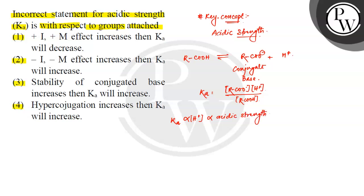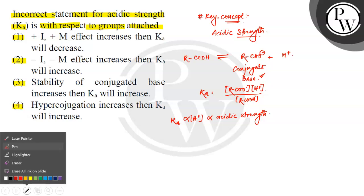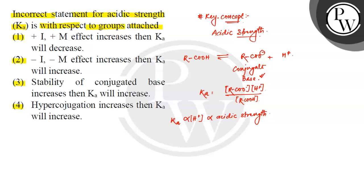Here we can understand that acidic strength is related to the conjugate base. The conjugate base is RCOO⁻. If its stability is increased, the acid RCOOH more readily loses H⁺, stabilizing in the conjugate base. Therefore, acidic strength is directly proportional to the stability of the conjugate base.